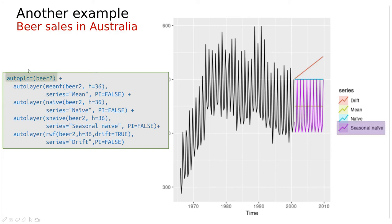This is really simple to use: just use autoplot on the beer data and add different layers using different methods. We still haven't talked about the 'pi' argument, which relates to the prediction intervals and our uncertainty around these forecasts.